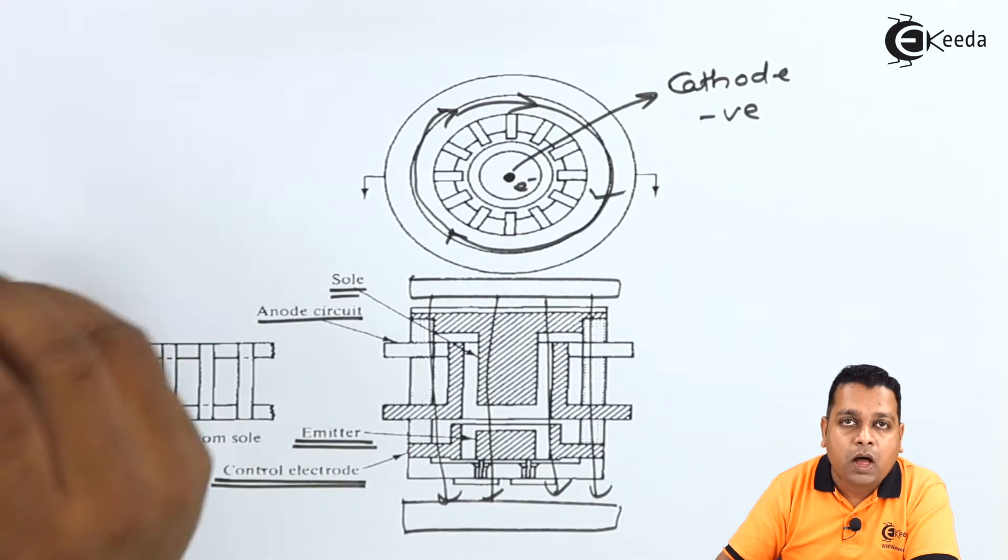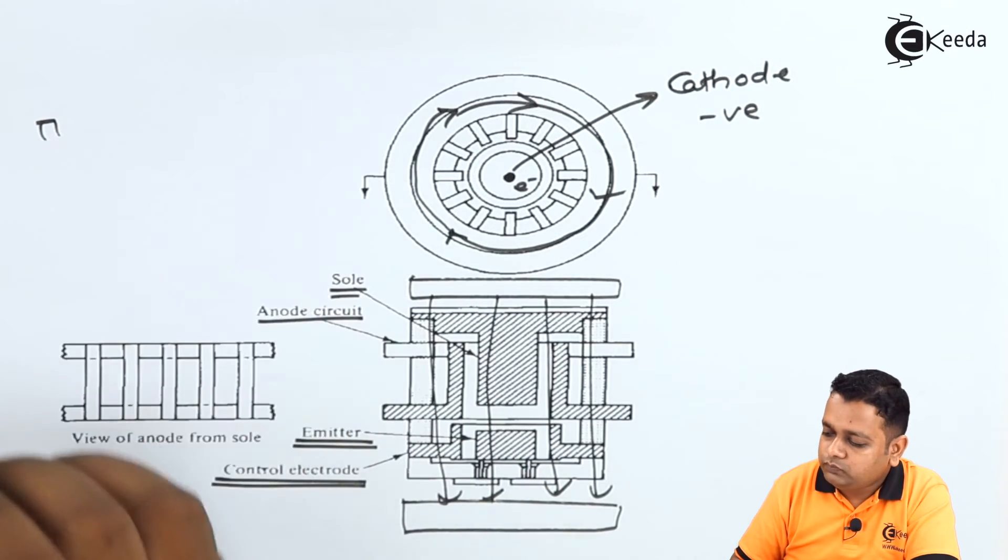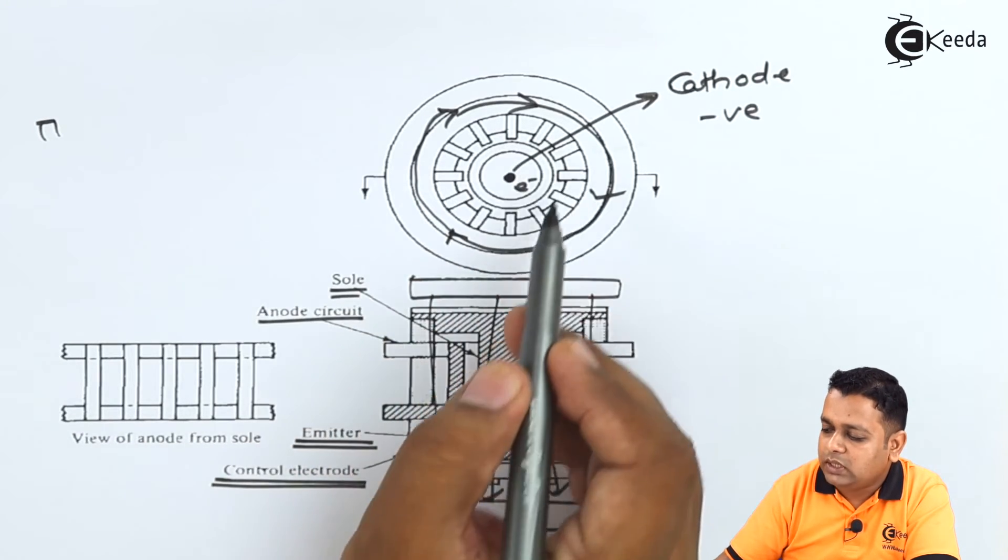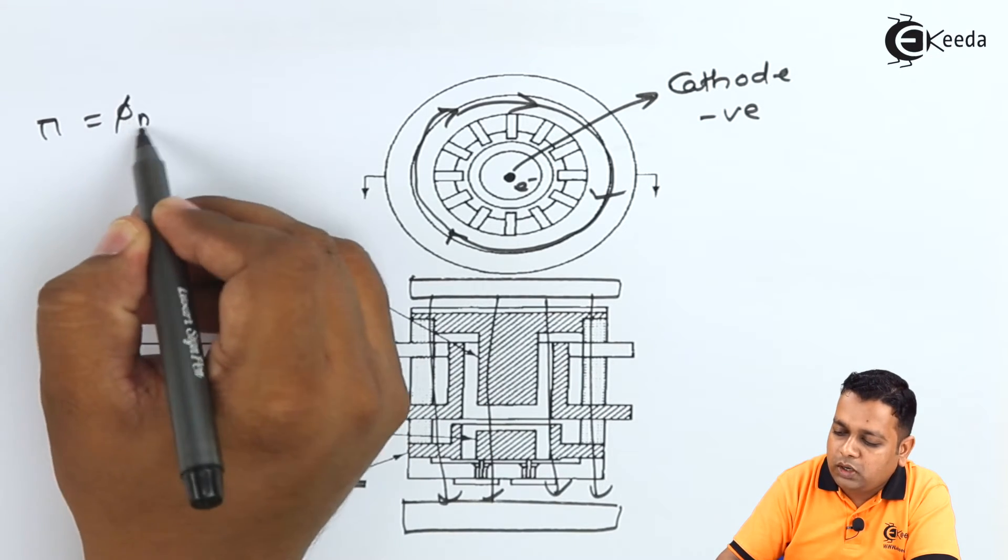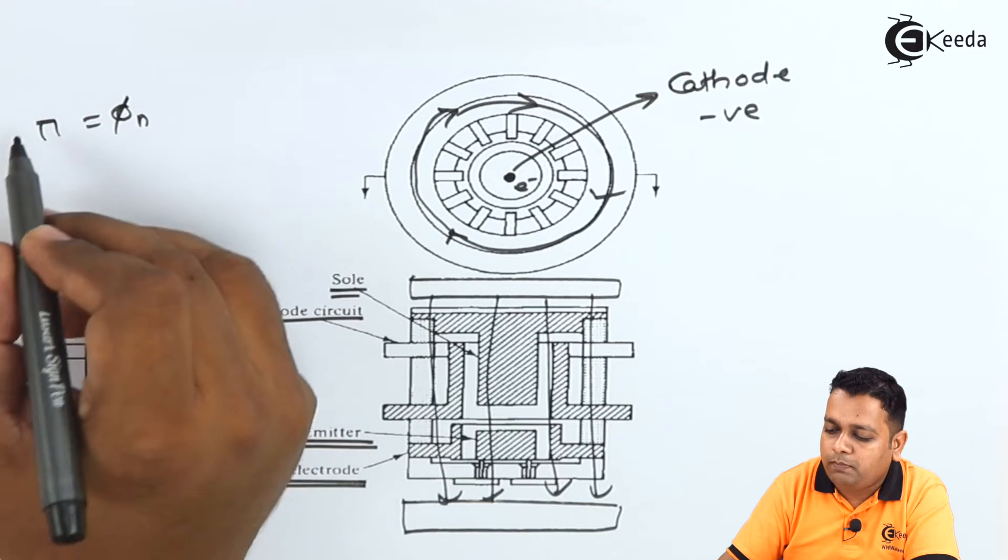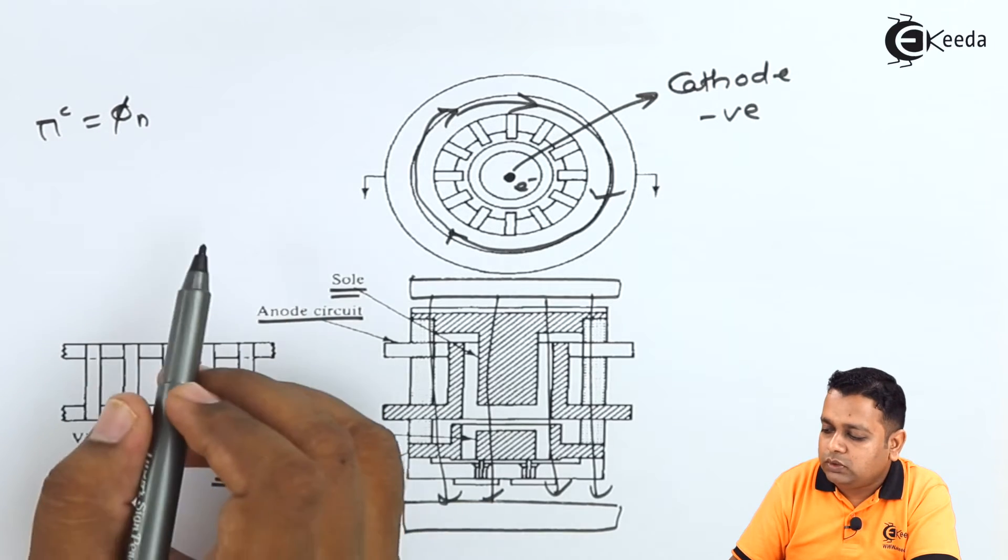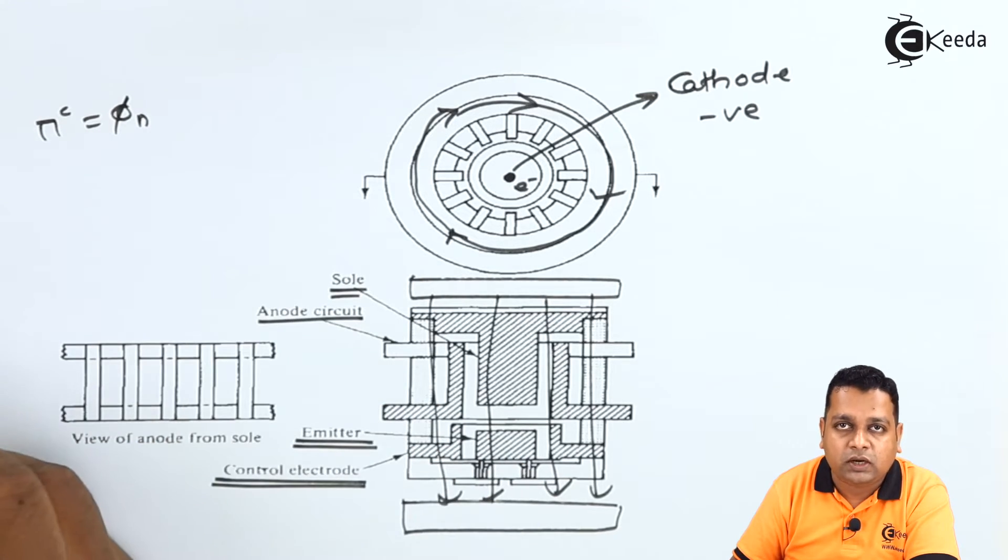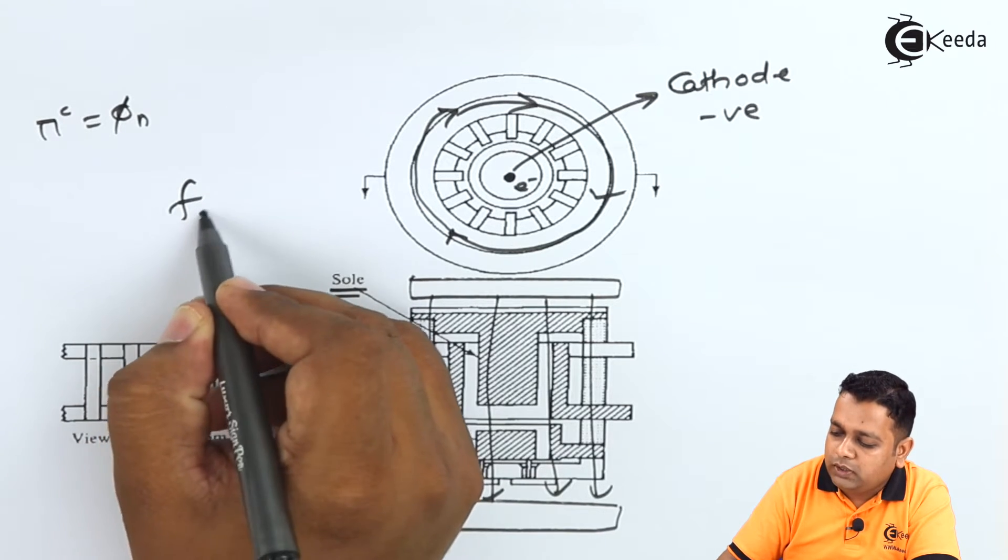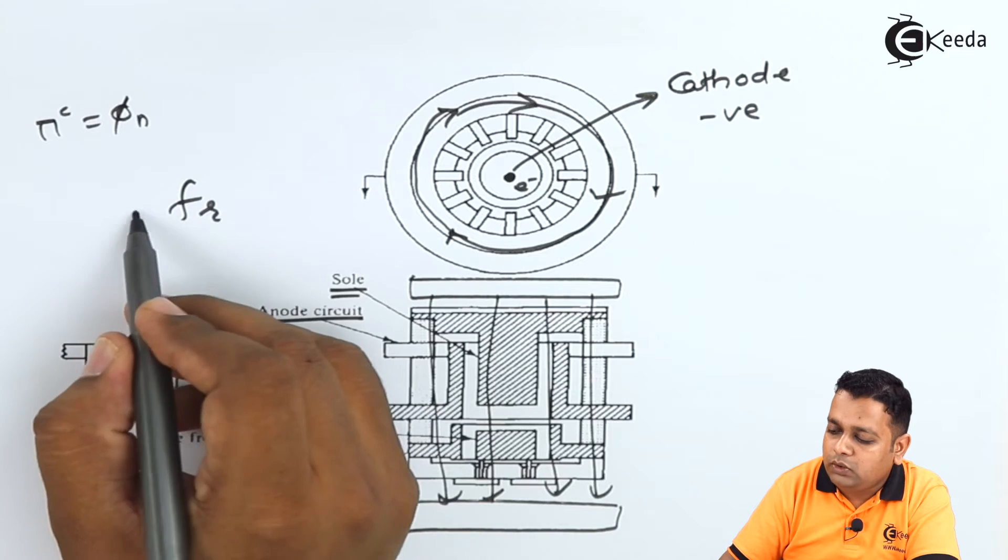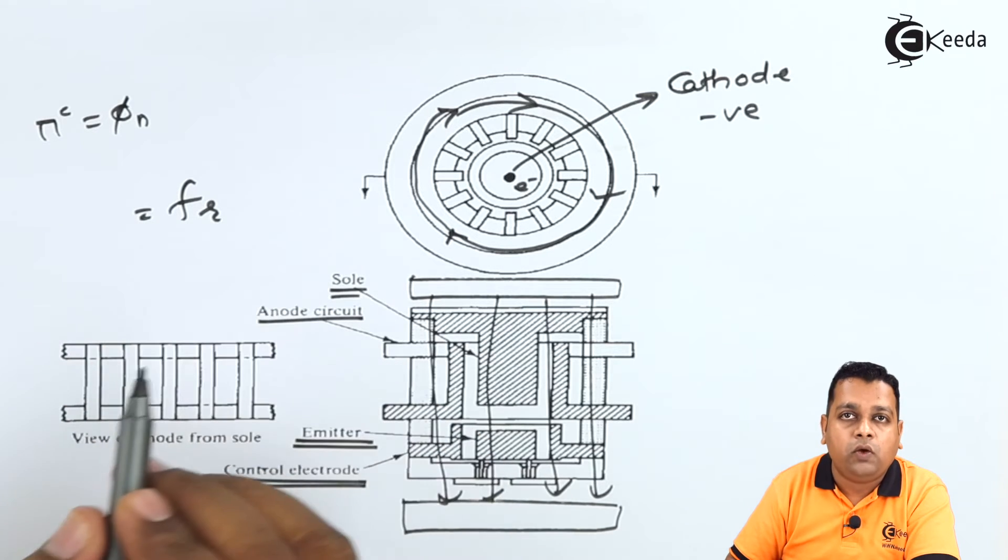Now at the pi mode of oscillations when these resonant cavities are there with a phase shift denoted by pi sub x n to be of pi radians here. So the pi mode of oscillations will be generated here and the oscillating frequency or the frequency of resonance will be totally depending on the velocity of electrons that are having rotations in between the anode and the sole here.